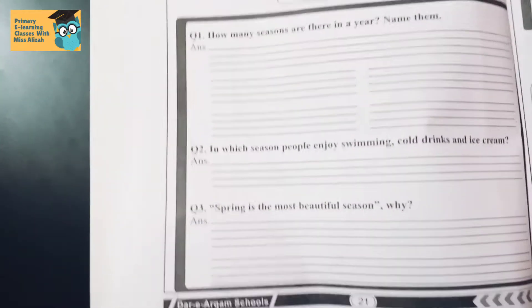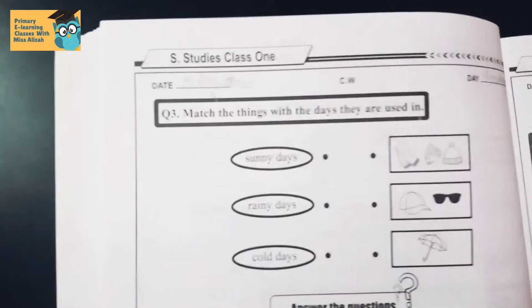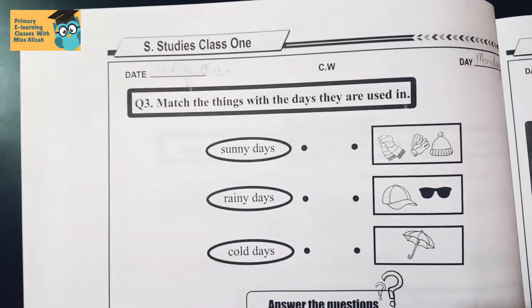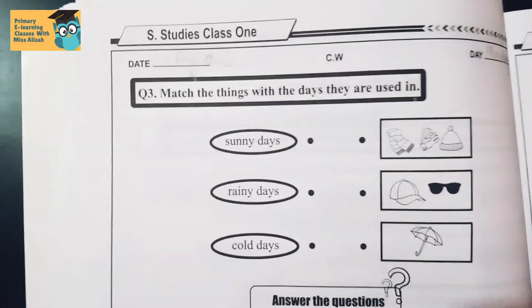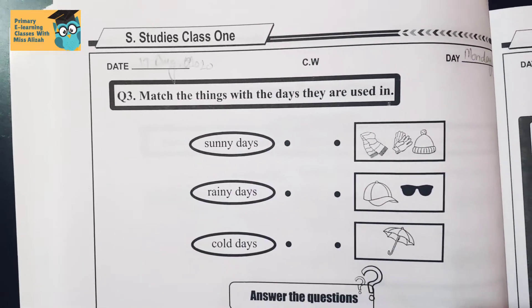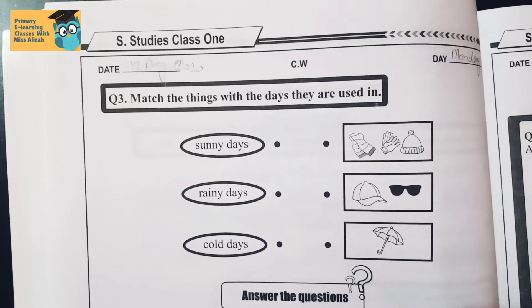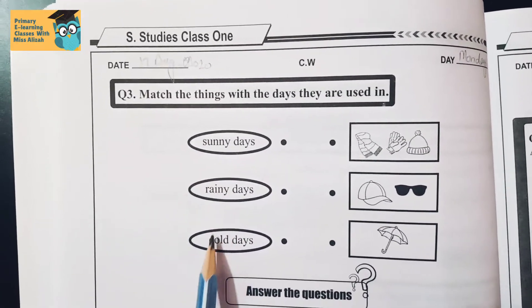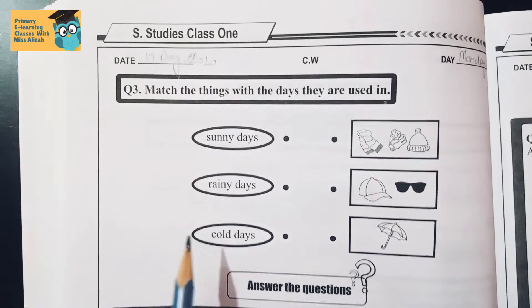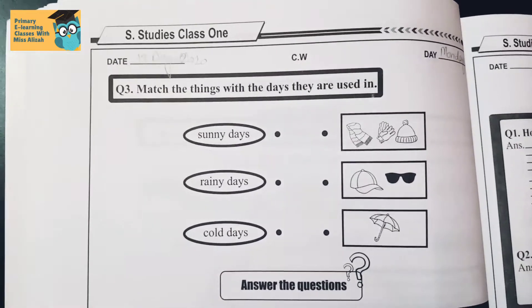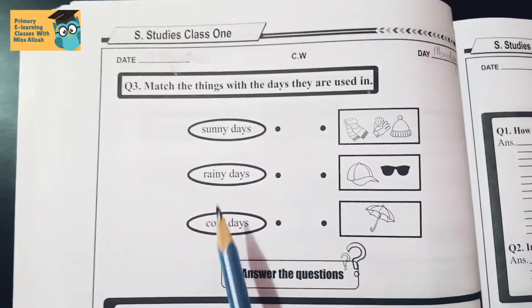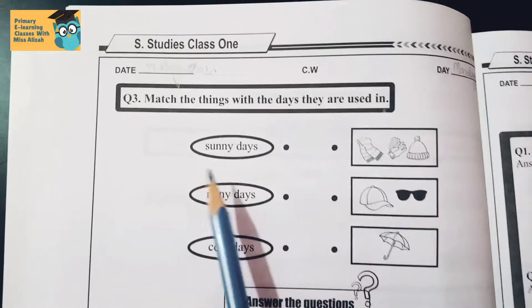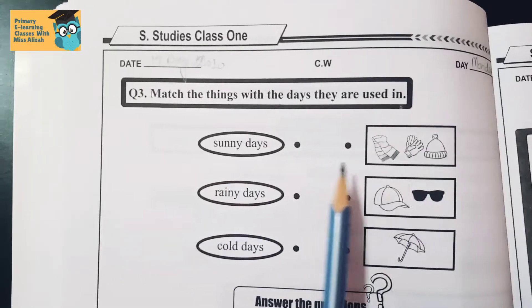Moving on to the next page, which is page 21. Write down the date and day here as well. Now read question number three: match the things with the days they are used in. You have to match three days given — sunny, rainy, and cold — with the items used on those days.